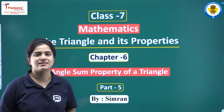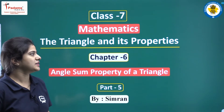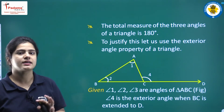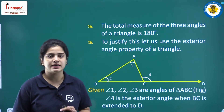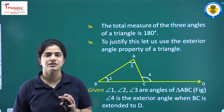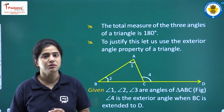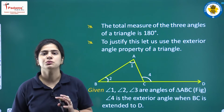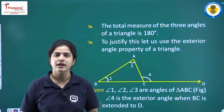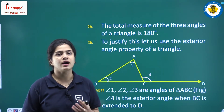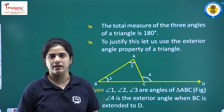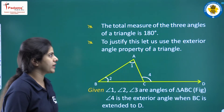So let's start discussing that. The angle sum property says that all the angles of a triangle sum to 180 degrees. This is the angle sum property of the triangle.